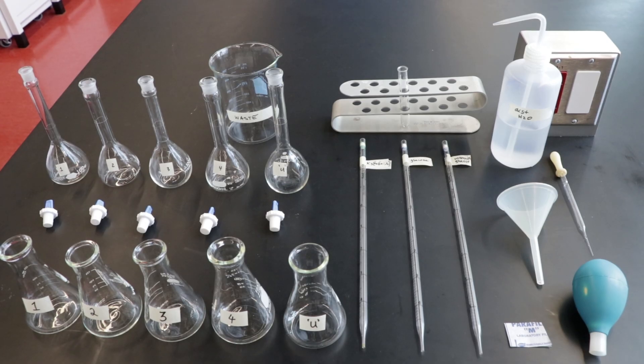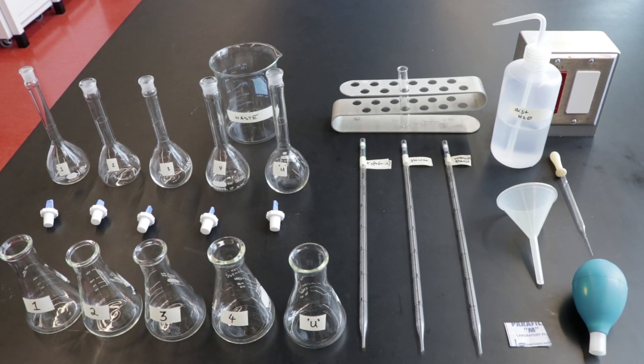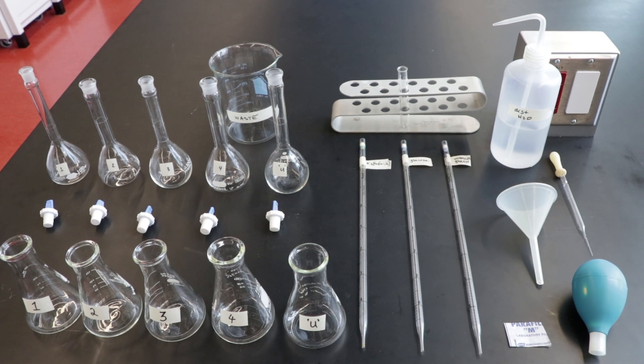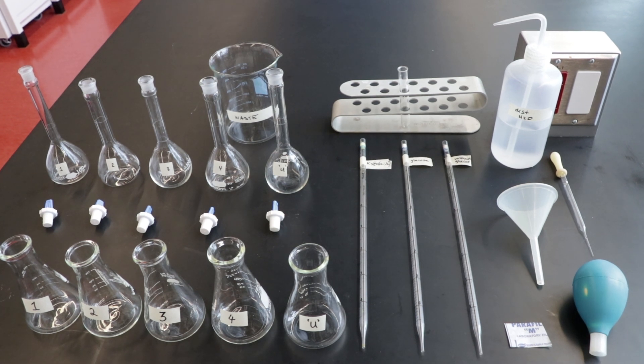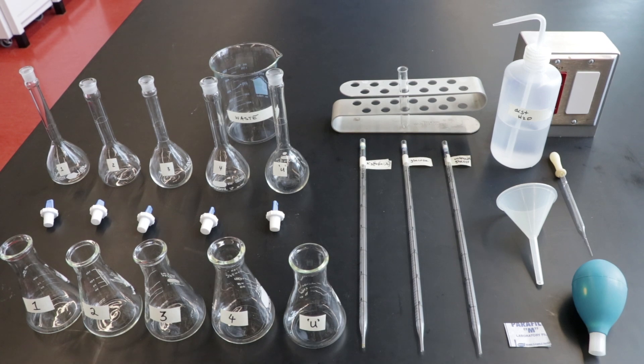Here's the equipment needed for this lab. Label all the glassware to ensure that you are organized. The Erlenmeyer and volumetric flasks should be labeled flask 1, 2, 3, 4, and U for the unknown. The more pipettes should be labeled glucose, ferrocyanide, and unknown glucose.